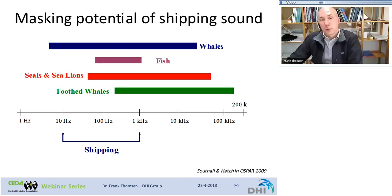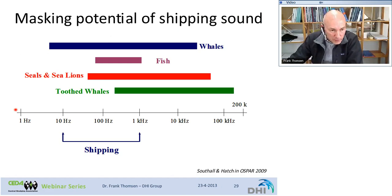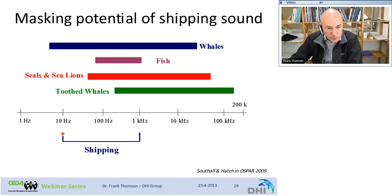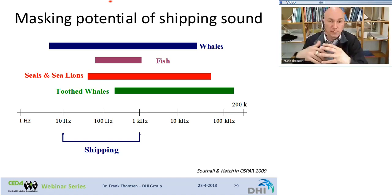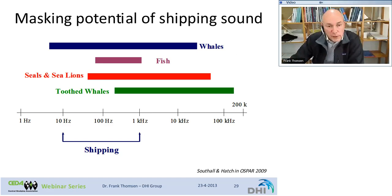Masking is the obscurement of biologically relevant sound. The masking potential of shipping sound is shown across a frequency range from 1 Hz to 100 kHz. The upper panel shows vocalization frequencies of whales, fish, sea lions, and toothed whales, alongside the range of shipping sounds — roughly 10 Hz to 1 kHz. If there is a masking issue, it will primarily affect larger whales and fish, whose communication signals are completely masked by shipping sound. For seals, sea lions, and toothed whales, the issue may be minor because many of their signals fall outside the shipping noise range.